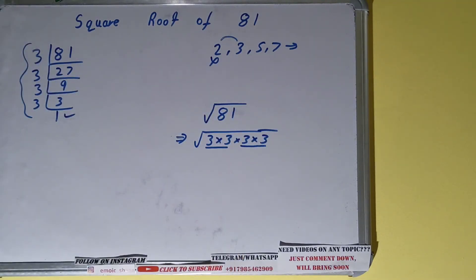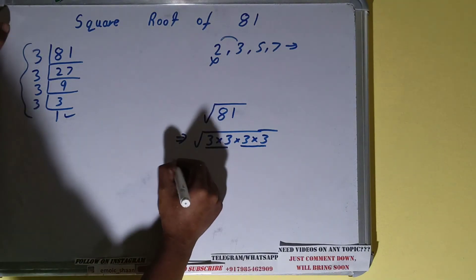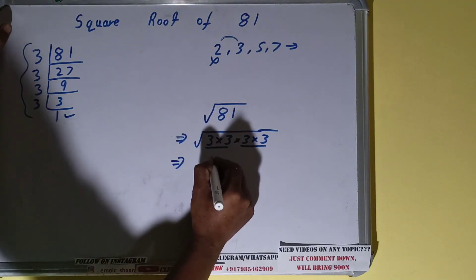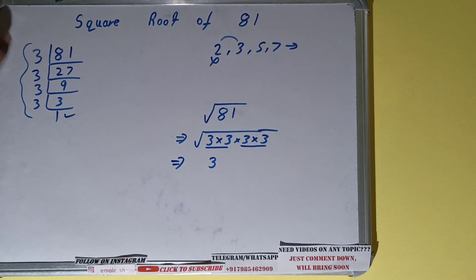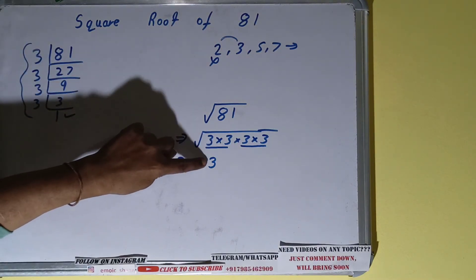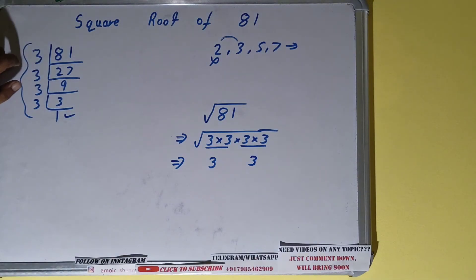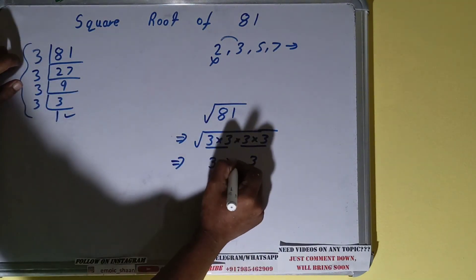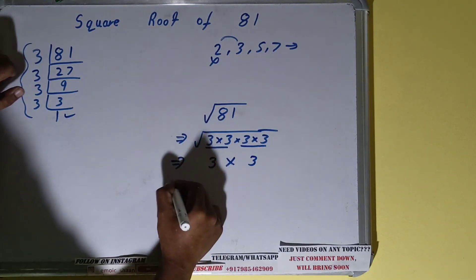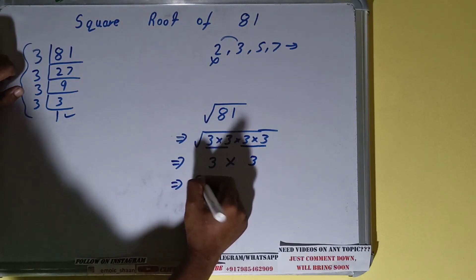And for each pair, you can write one number outside. This is a pair of three, so write three. This is a pair of three too, so write another three. The square root is now removed, and in between put a multiplication sign. The answer will be 9.